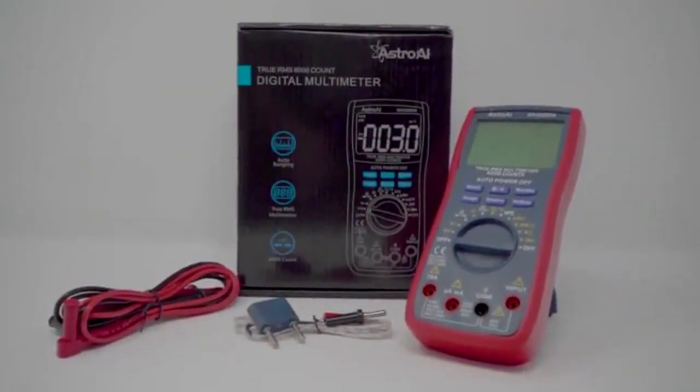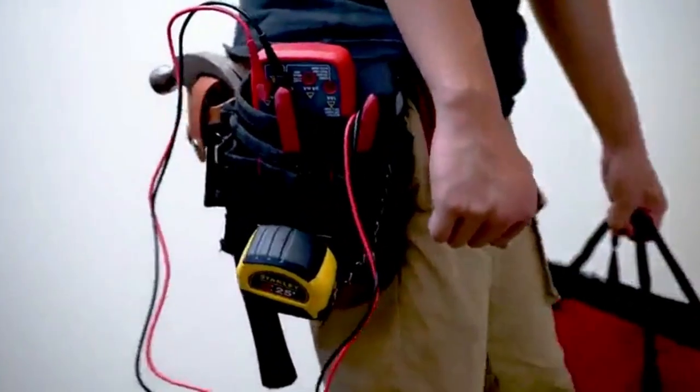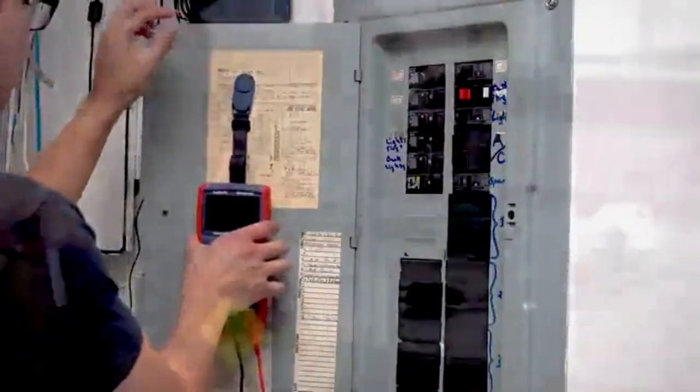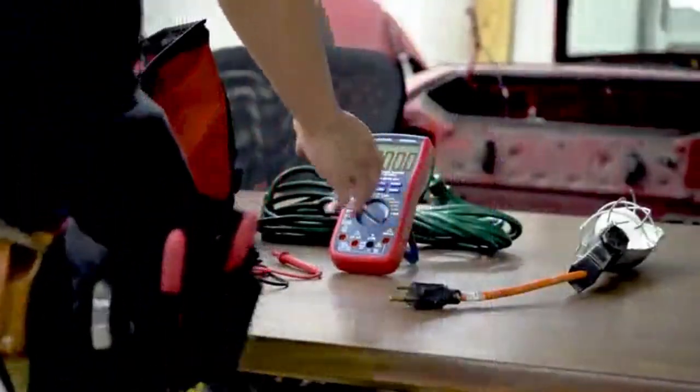Whether you're fixing a household appliance, checking batteries, or working on a car or circuit board, a reliable multimeter is a must-have tool. The best multimeters give you accurate readings for voltage, current, resistance, continuity, and more.